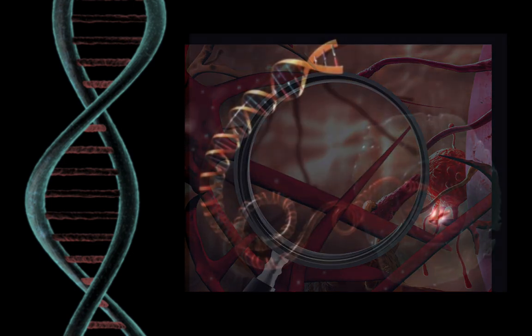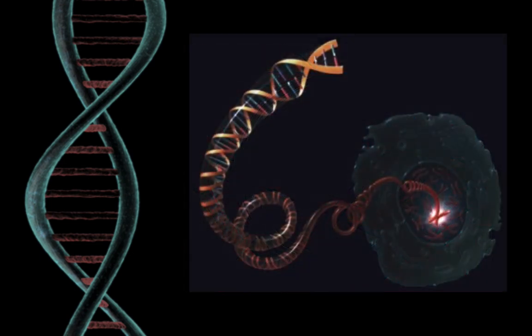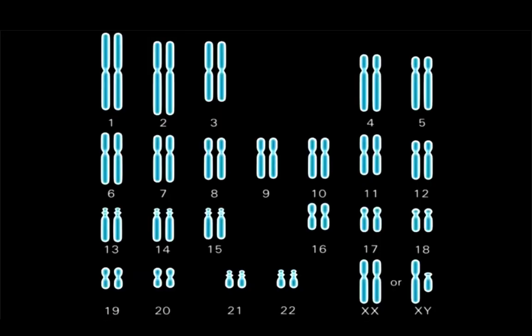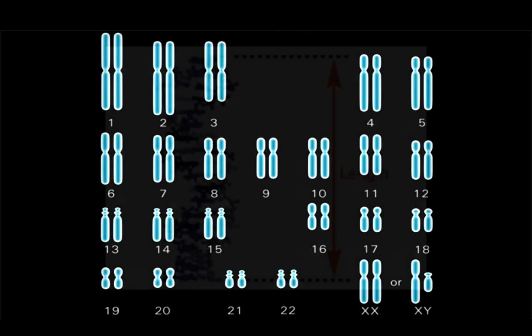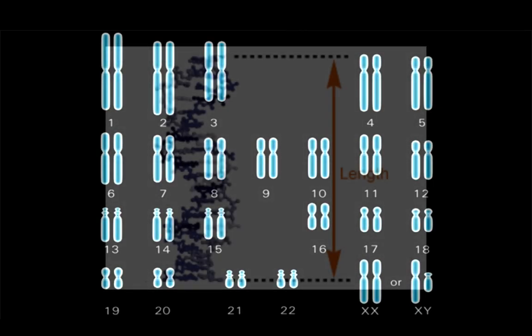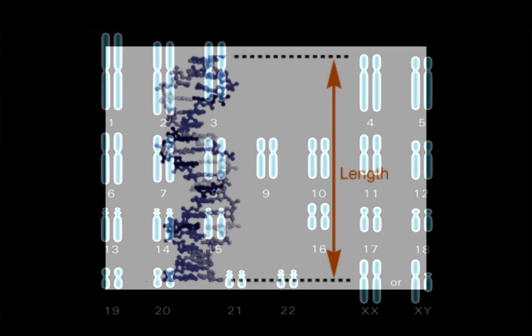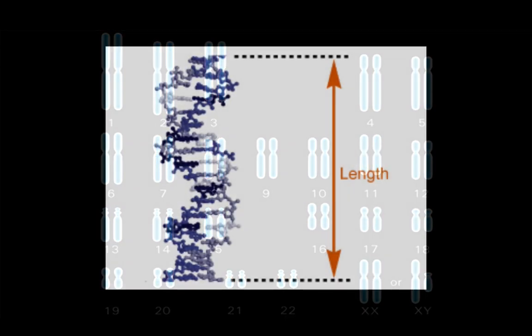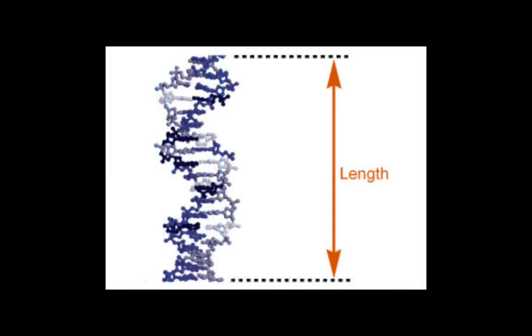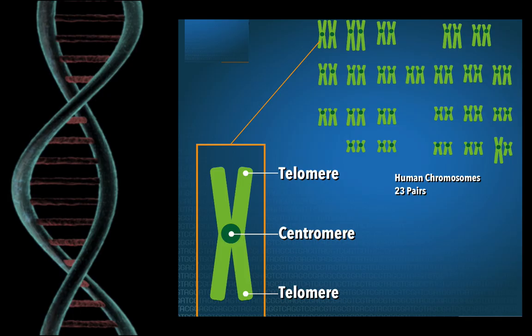On average, a single human chromosome consists of a DNA molecule that is about 2 inches long. The chromosomes in the nucleus of a cell contain all the information a cell needs to carry on its life processes.